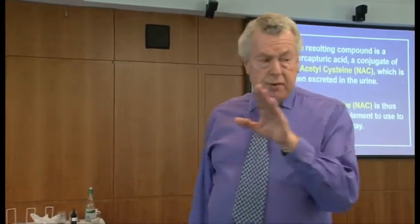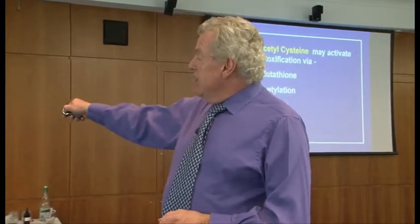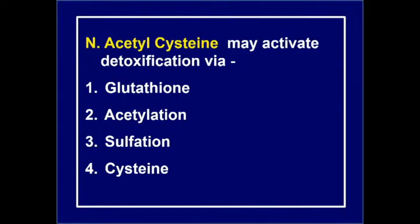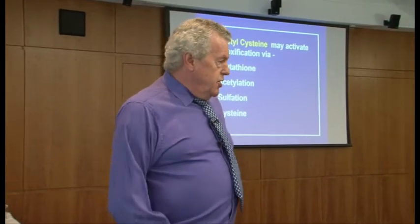N-acetylcysteine is an excellent supplement to activate the glutathione pathway. It has many detoxifying properties: it activates glutathione, which is the main pathway for most drugs. The acetyl part stimulates acetylation, helping people with acetylation problems. The cysteine is a sulfur-bearing amino acid, so it stimulates sulfation. And the cysteine itself can bond directly onto the toxin and pass out. So there are four ways that N-acetylcysteine works.